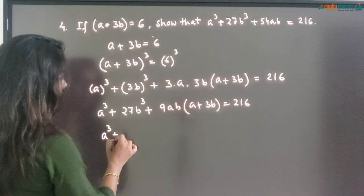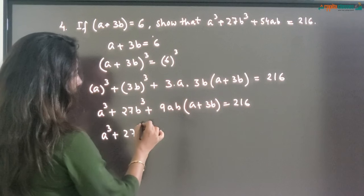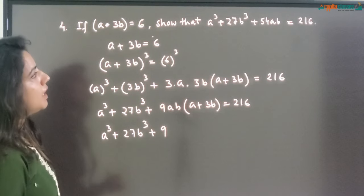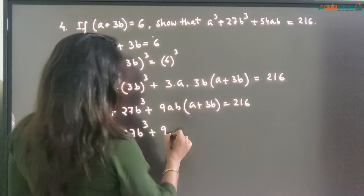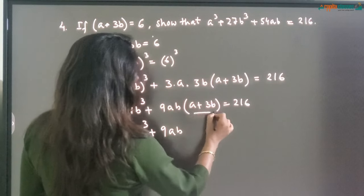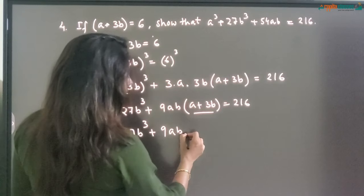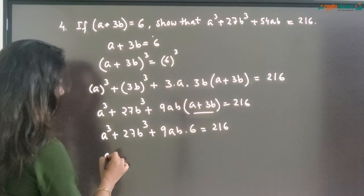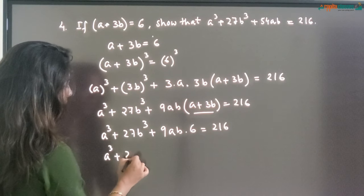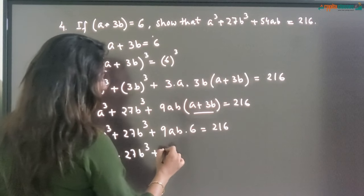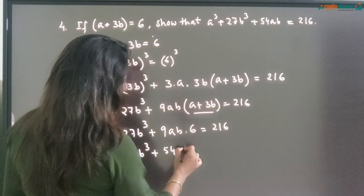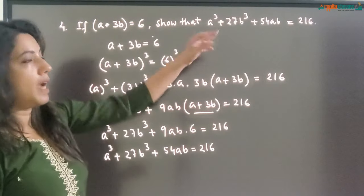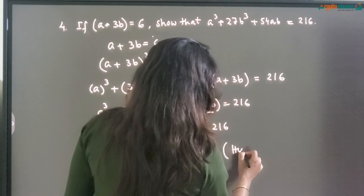Next step: A cube plus 27B cube plus 9AB whole into A plus 3B equals 216. Now substituting A plus 3B equals 6: A cube plus 27B cube plus 9AB into 6 equals 216. So A cube plus 27B cube plus 54AB equals 216. That is what we had to prove, so hence proved.